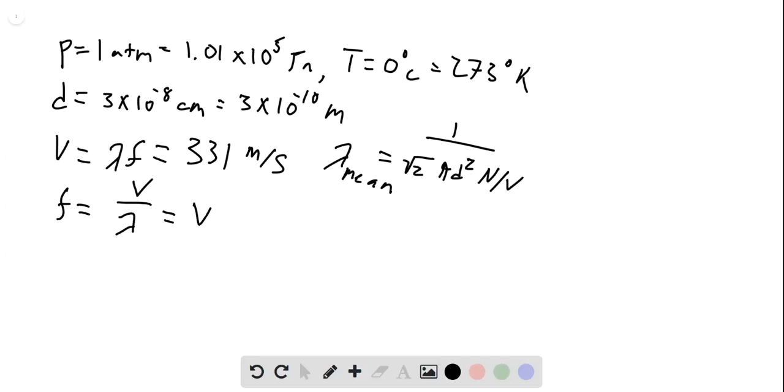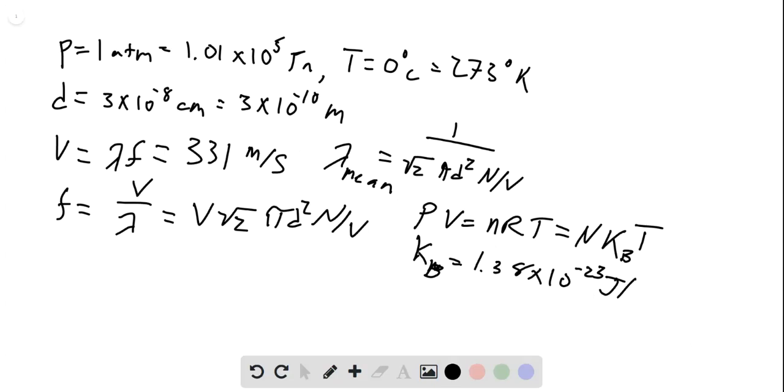So we can rewrite this using PV = nRT, which is the same as NkT, where k_B is the Boltzmann constant, 1.38 × 10^-23 joules per Kelvin. So substituting N/V for p over k_B T...